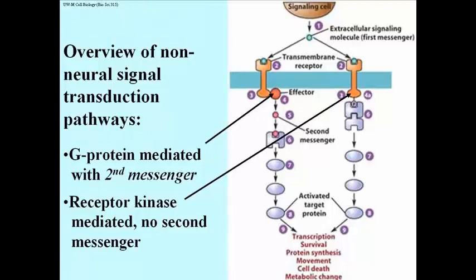Both usually involve a series of protein phosphorylations, commonly referred to as a phosphorylation cascade, that eventually leads to the appropriate cellular response, as illustrated in this figure.